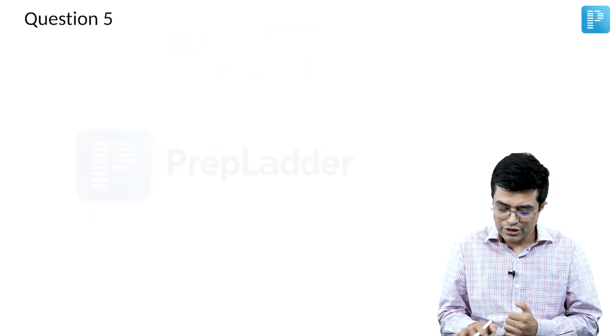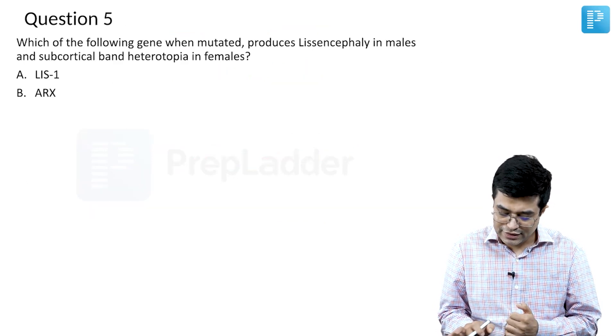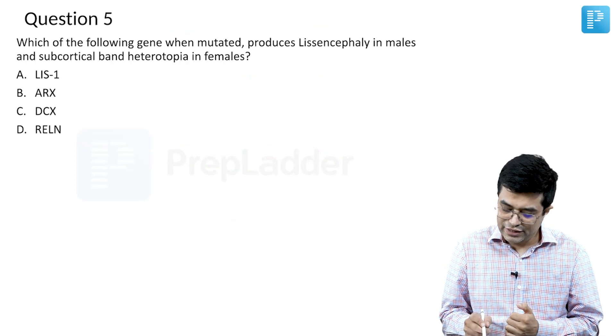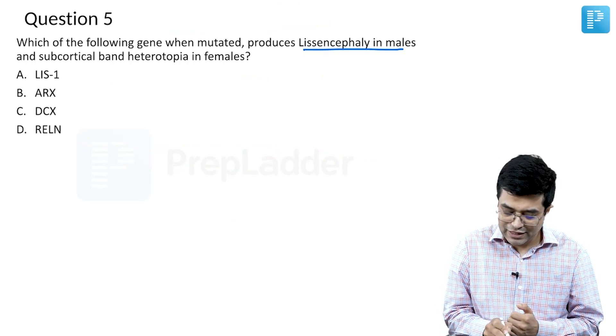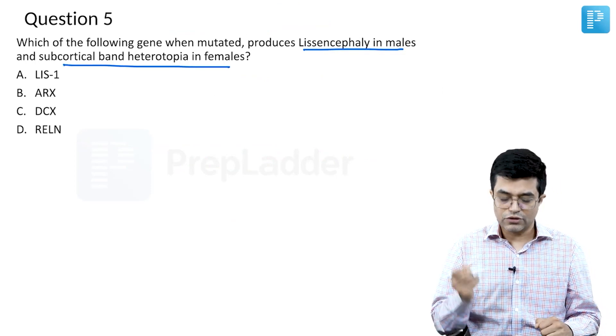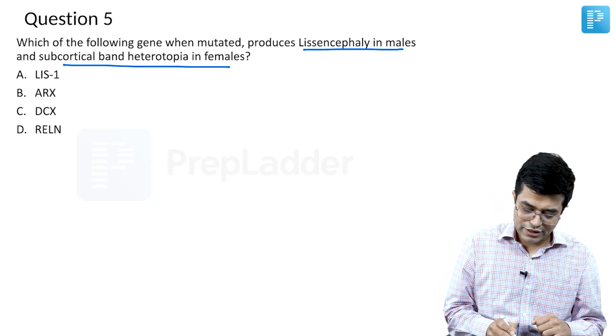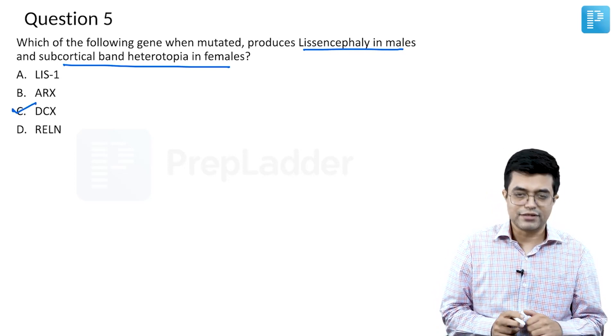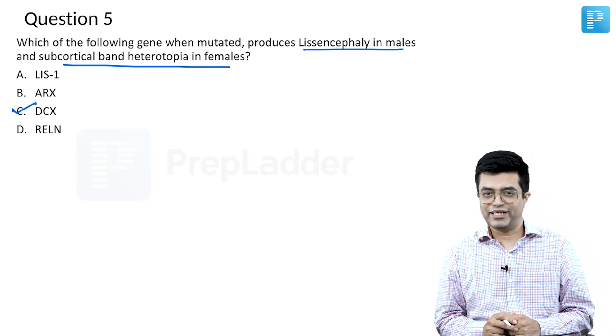Going back to the question — which gene when mutated produces lissencephaly in males and subcortical band heterotopia in females? The answer is option C, that is the DCX gene.